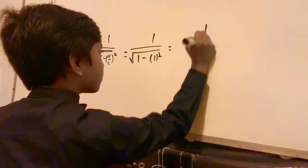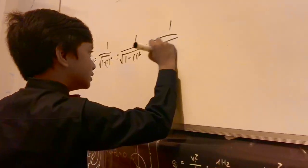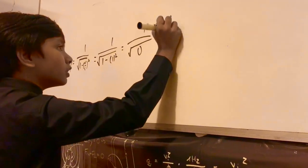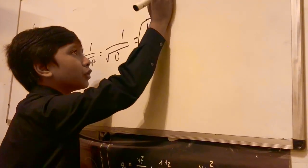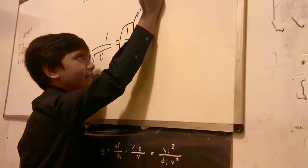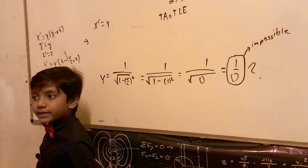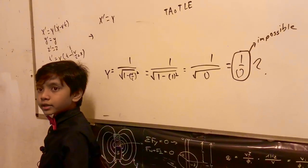You see where this is going, right? That gives you 0 on the bottom, which gives you 1 over 0, which is impossible, which doesn't make sense.